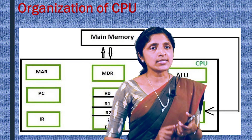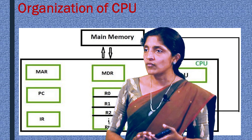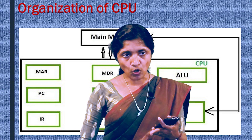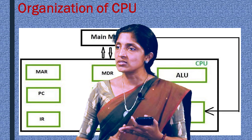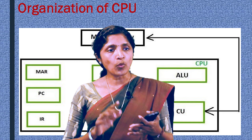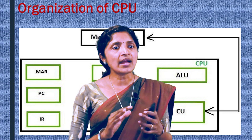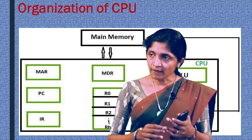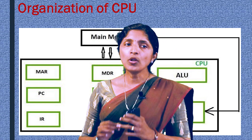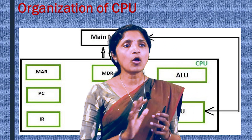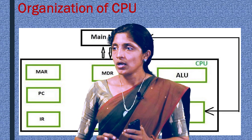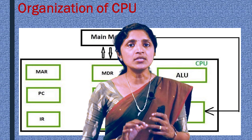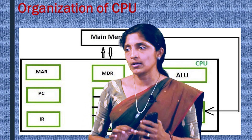Now let's see the general format of a central processing unit. CPU consists of arithmetic and logic unit, or ALU. It is the place where all the arithmetic and logical operations are being done. Next, we have a control unit. The control unit controls the overall operation of a computer — in other words, we can say that the control unit is the central nervous system of a computer.